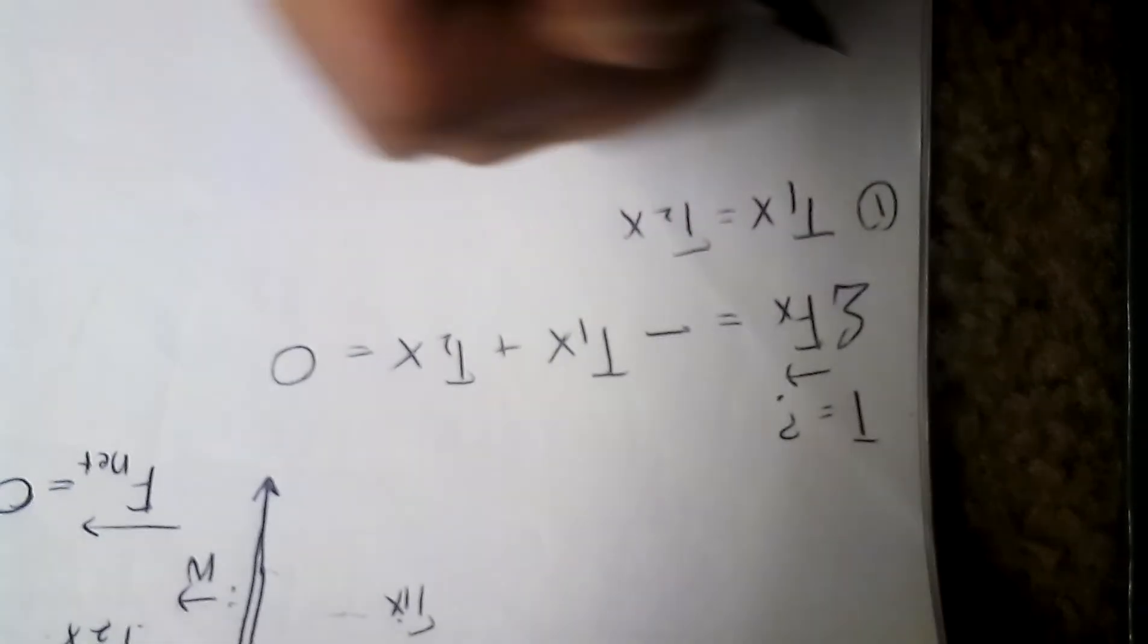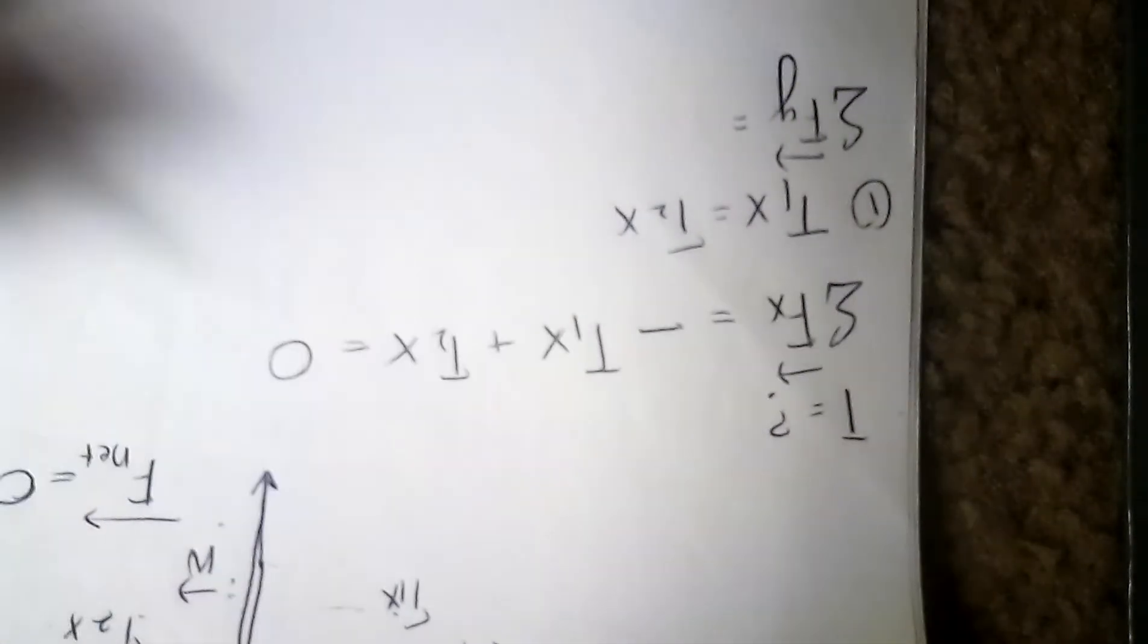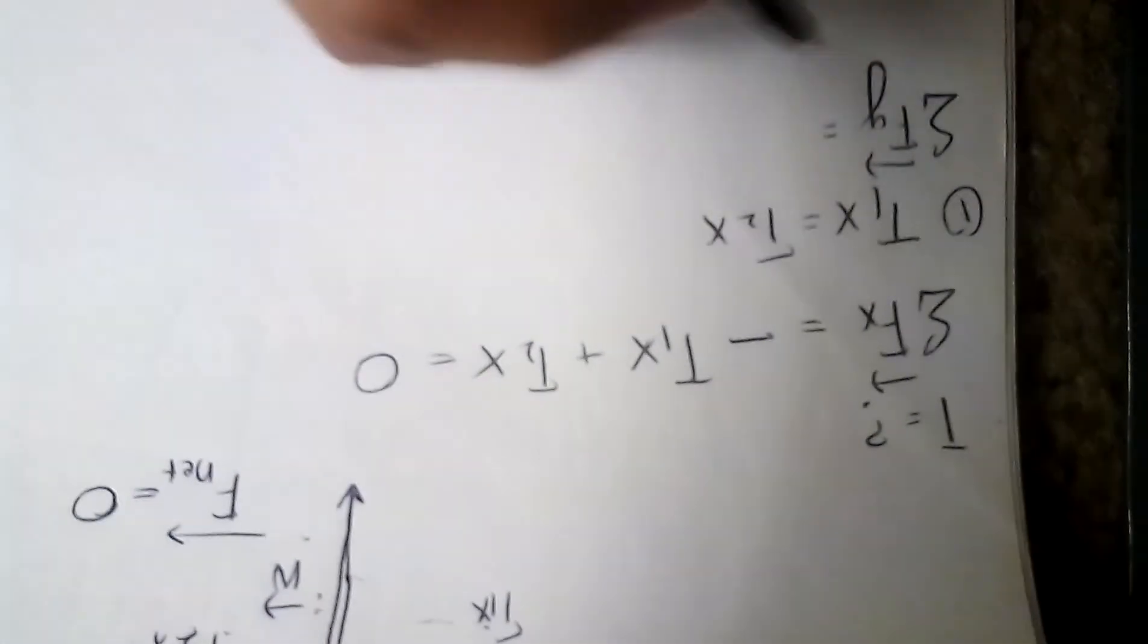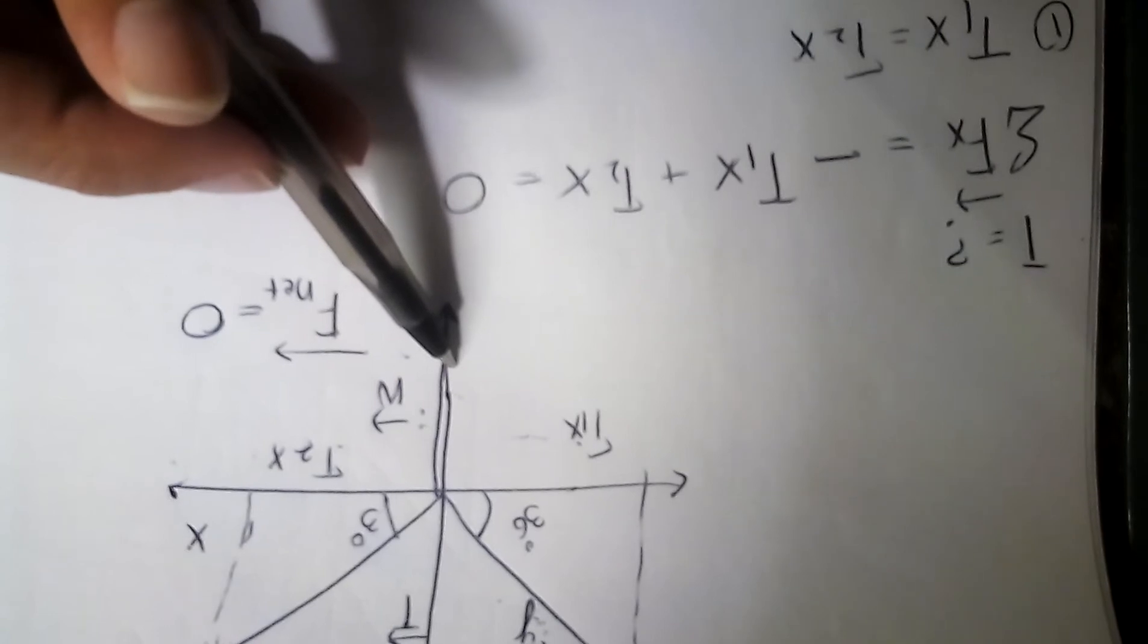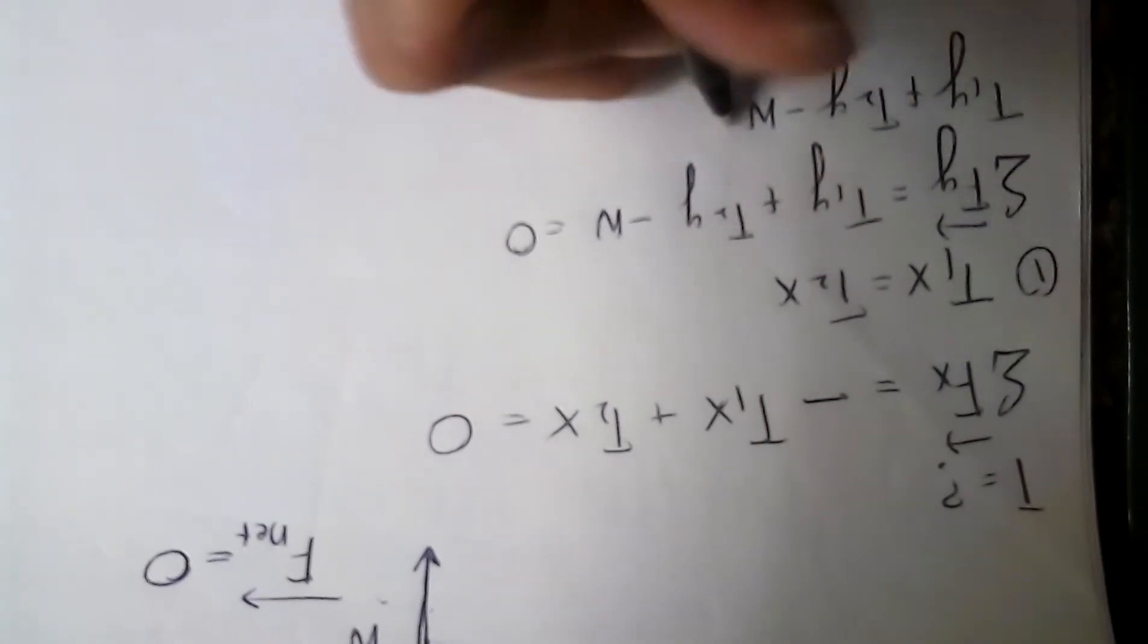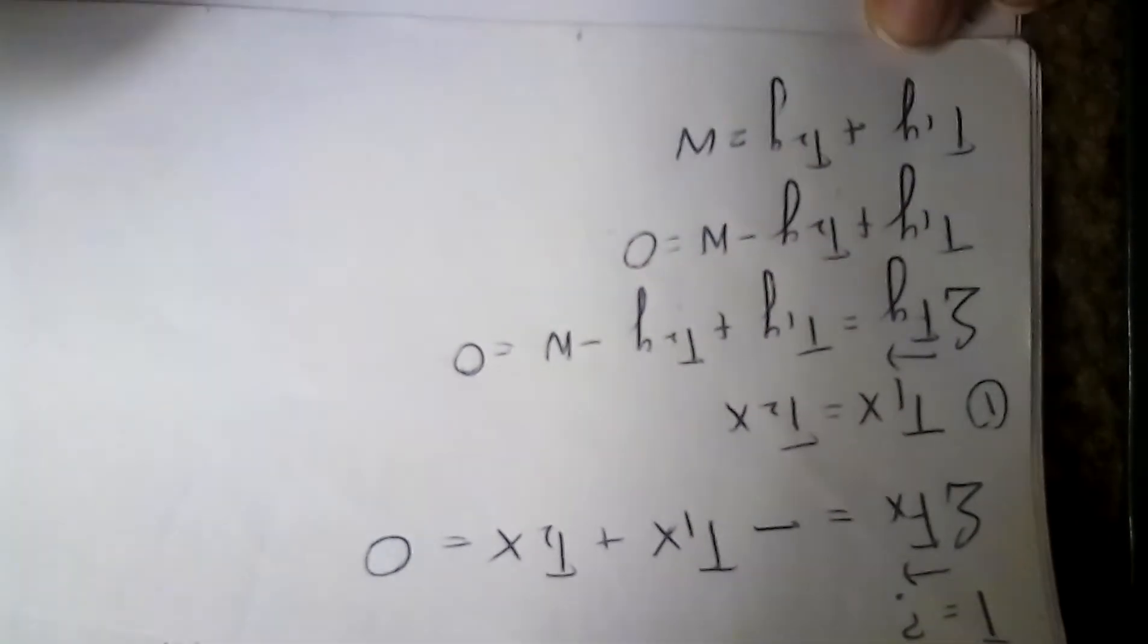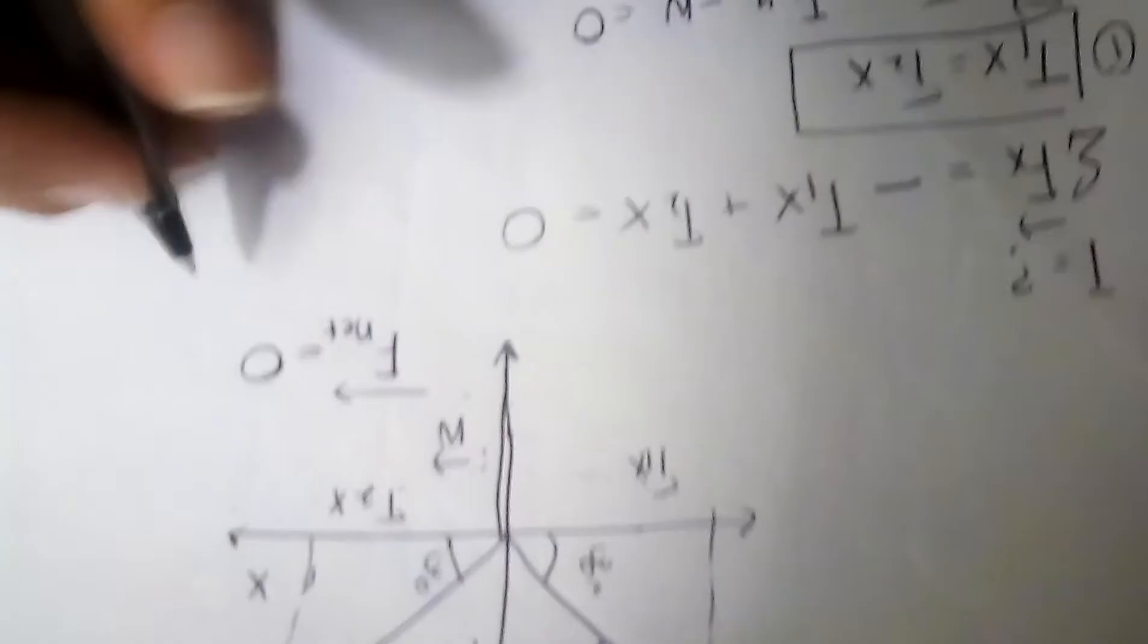Let's sum up all the forces on the y-axis. We got T1y, T2y, and then we got our weight. So T1y plus T2y minus W, since your W is in the negative y-axis, equals zero. T1y plus T2y equals W. Now we got our equations, this is our main equation that we have to work on.